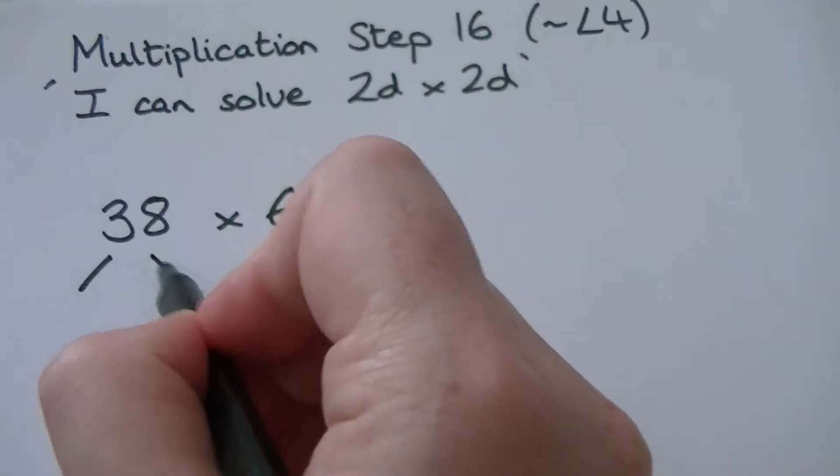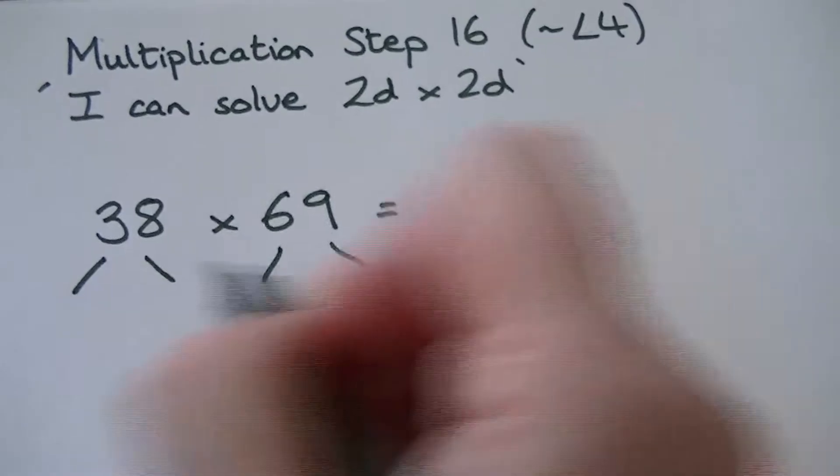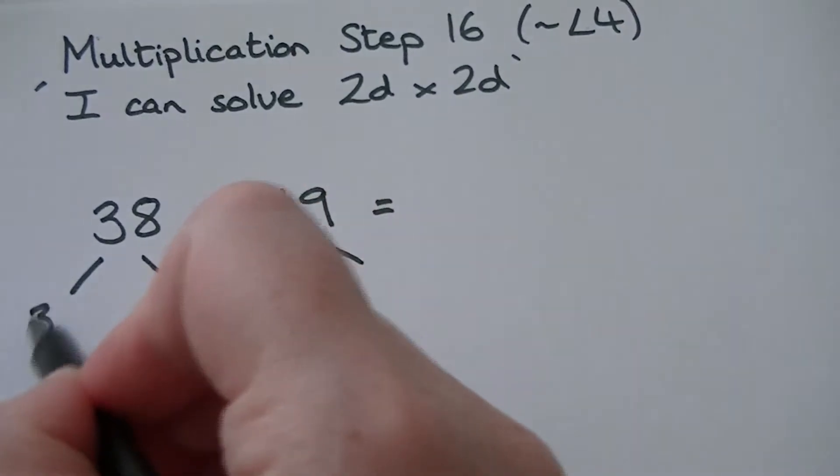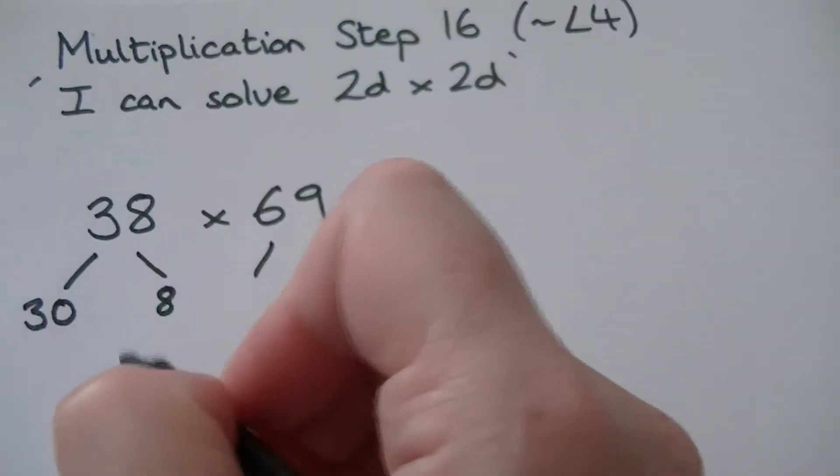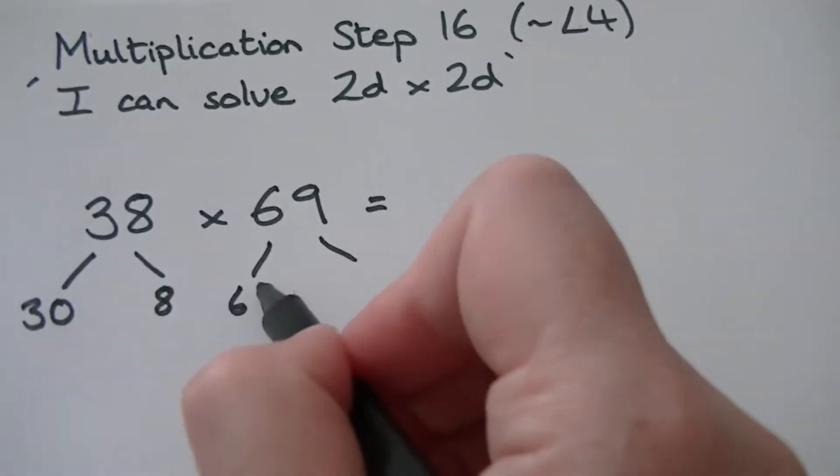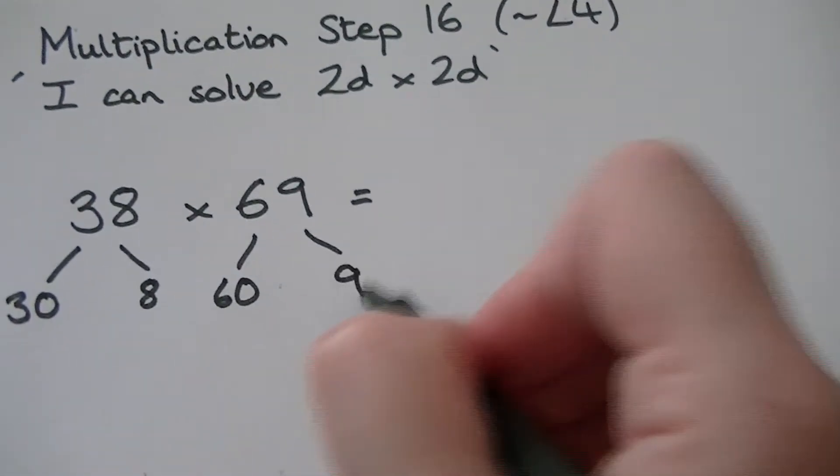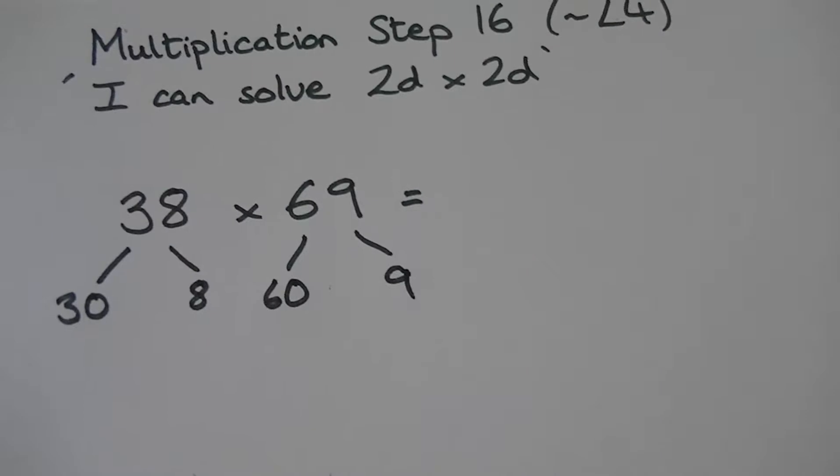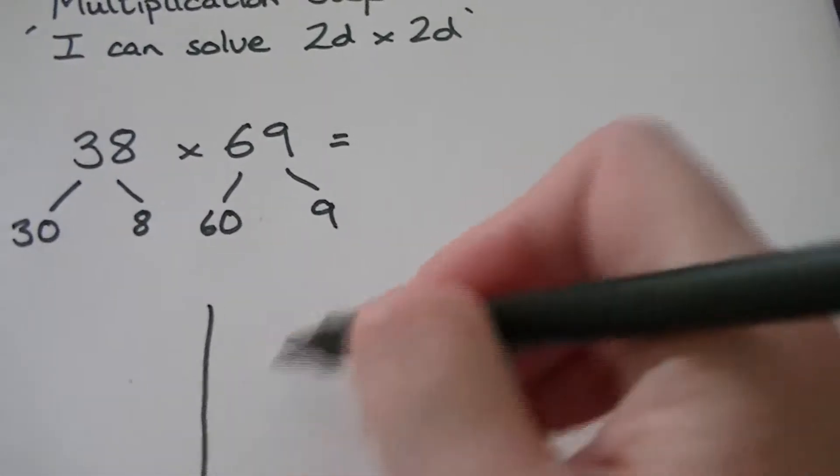We're going to partition the numbers so 38 becomes 30 and 8, and 69 becomes 60 and 9. Exactly what you do when you're using Squigleworth. Then we're going to create ourselves a grid.